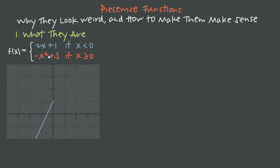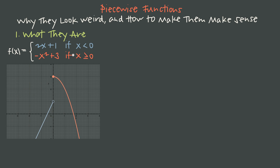We see these pieces when we sketch the graph of the function. If we just take the part 2x + 1, we could sketch that line on the graph — normally the full line would look like this. But because this piece only defines the function for x less than 0, we erase everything to the right of the y-axis so we only see the part of 2x + 1 where x is less than 0. Then to complete the graph, we sketch negative x squared plus 3, but only show the part to the right of the y-axis, because this piece only defines the function when x is greater than or equal to 0.